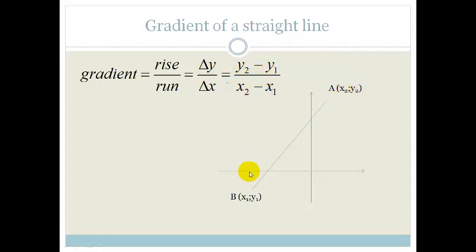So for example, here this would be y2, y1, x2, x1. This is all very well if we're talking about the gradient of a straight line.